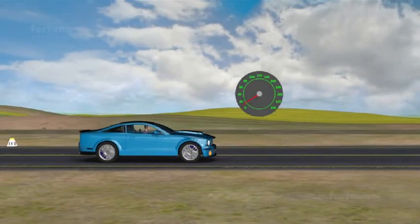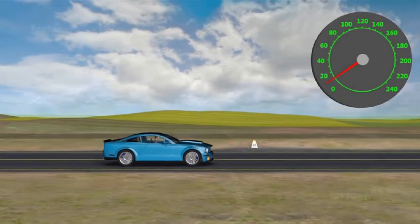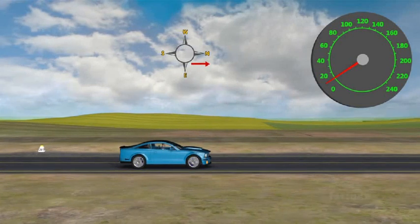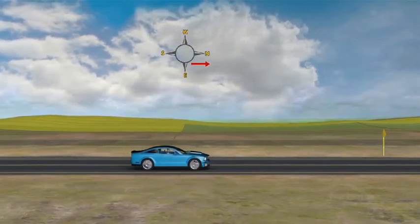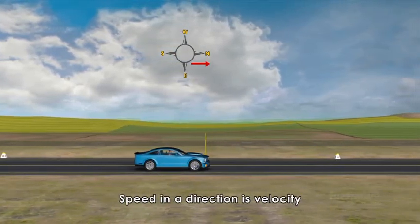Let's think of a car moving at a speed of 10 miles an hour. If we specified the direction our car was traveling in, north for example, we would say the velocity is 10 miles per hour north. Simply put, speed in a direction is velocity.